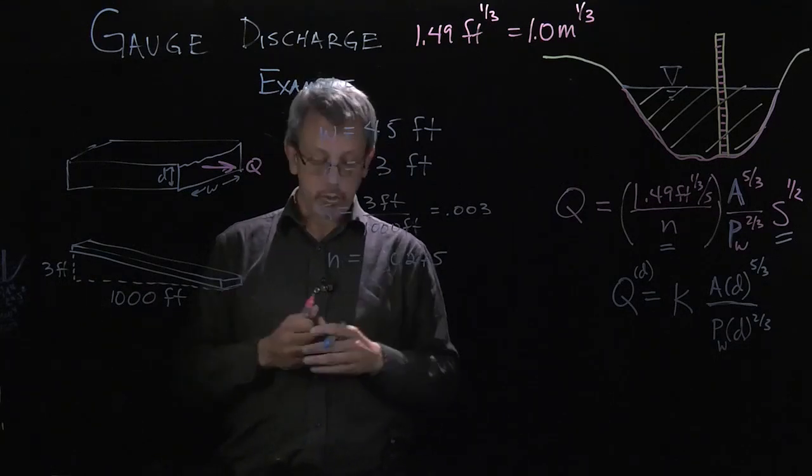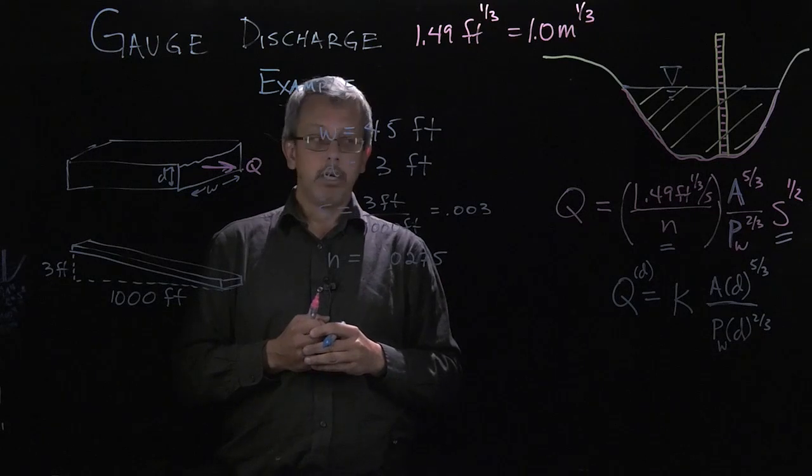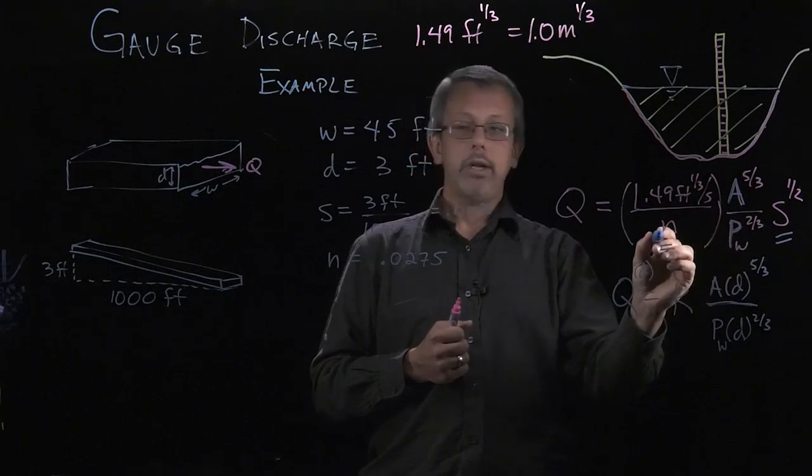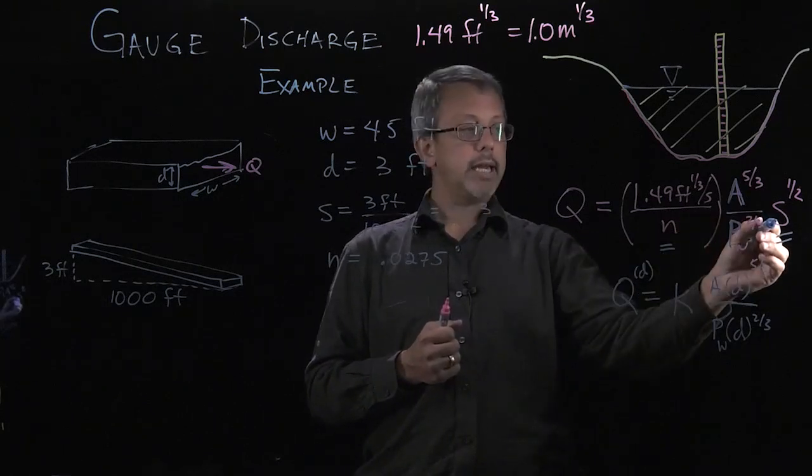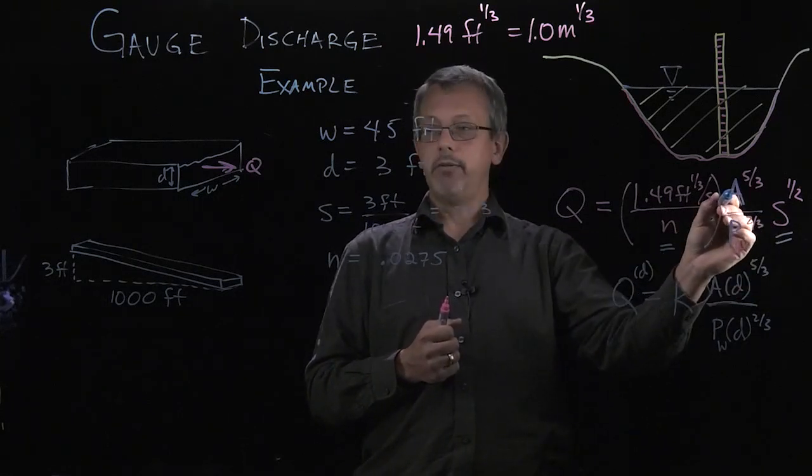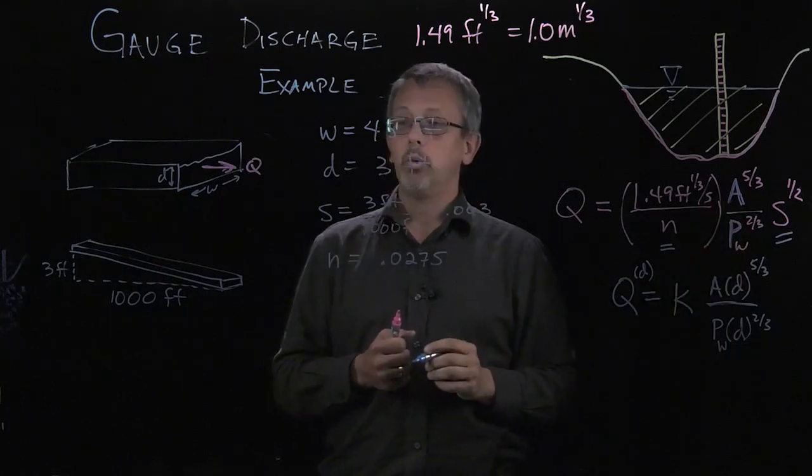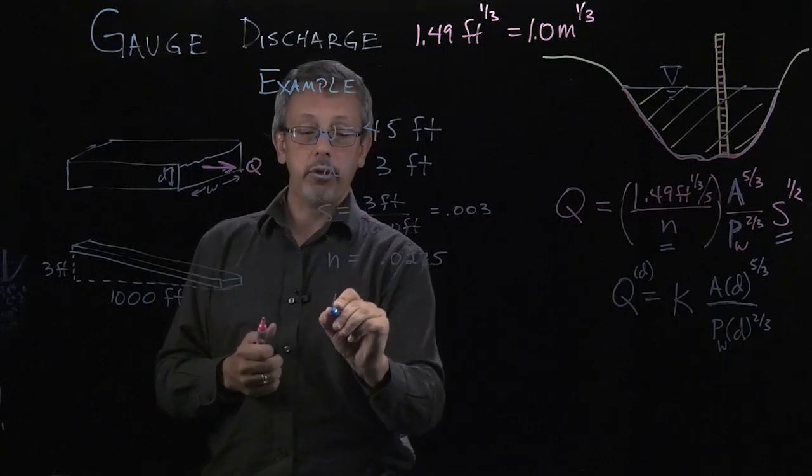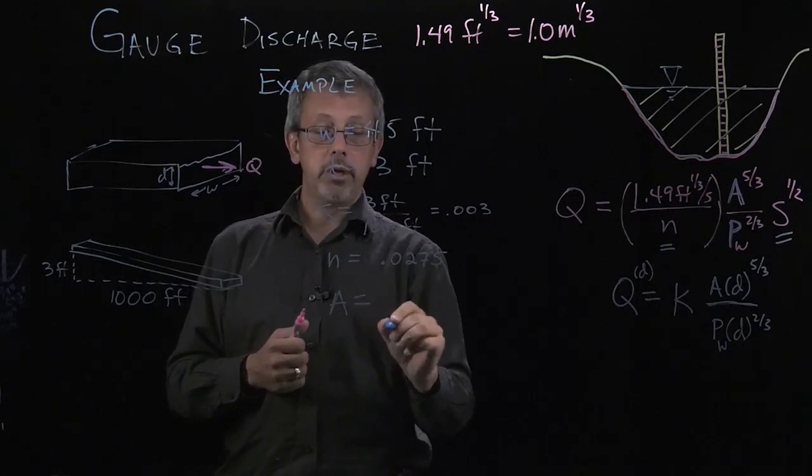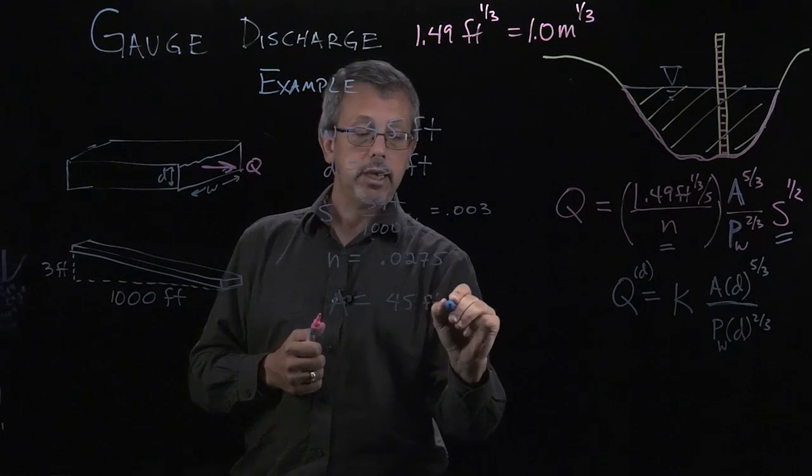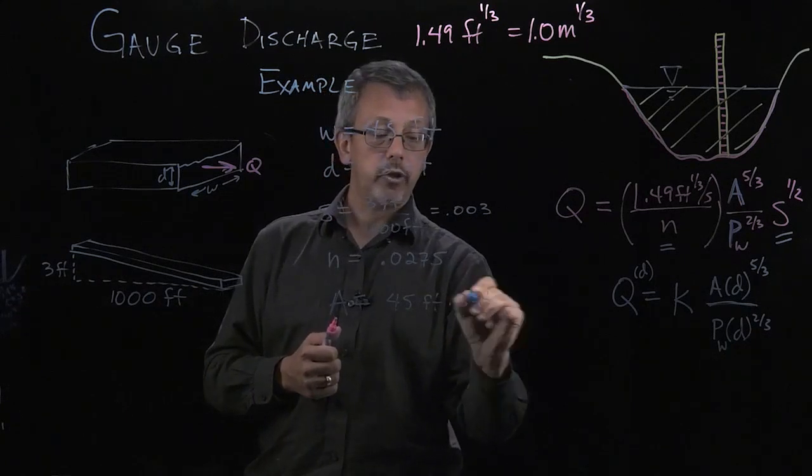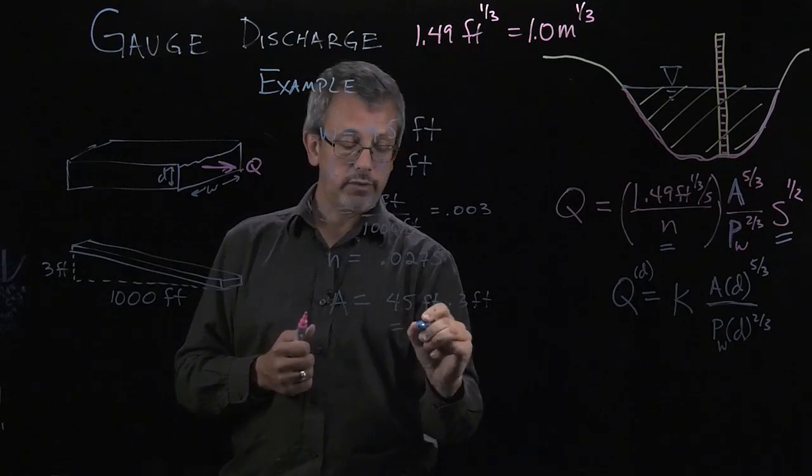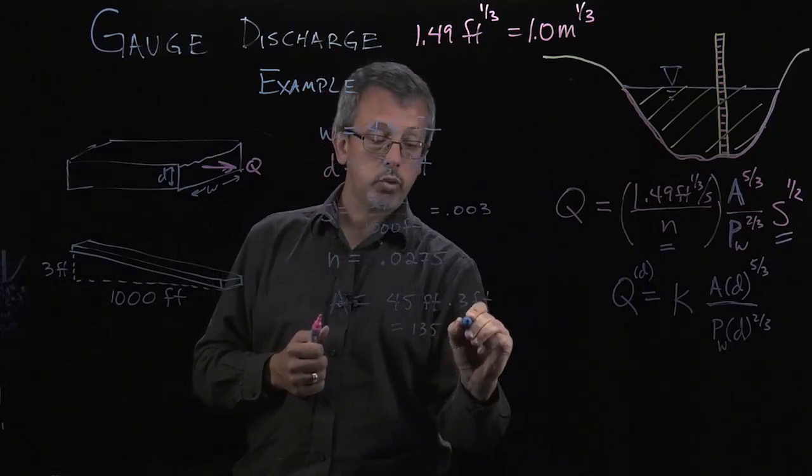So this appears to be all the pieces we need. If we look over here at our Manning's equation, we have N, we've just calculated S, but we also need to figure out our area and our wetted perimeter. Well the area here is fairly straightforward. Area equals width times depth. So our area is going to be the 45 feet times our 3 feet, since we have a rectangular raceway. And that's going to give us a value of 135 square feet.